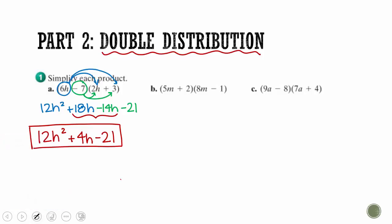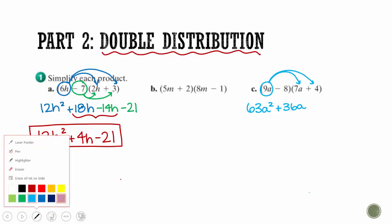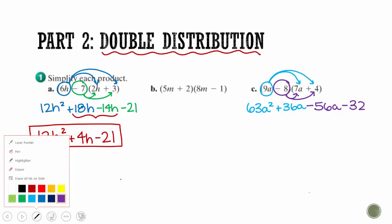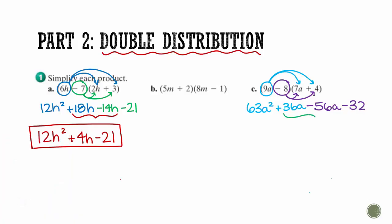Let's try the next one together. We double distribute: 9a times 7a — multiply the numbers and add the exponents. Then 9a times 4 — multiply the numbers and add the exponents. Next, negative 8 times 7a gives me negative 56a, and negative 8 times 4 gives me negative 32. Make sure you combine like terms before you leave the problem. The terms with just one a combine: we get 63a squared, minus 20a, minus 32.